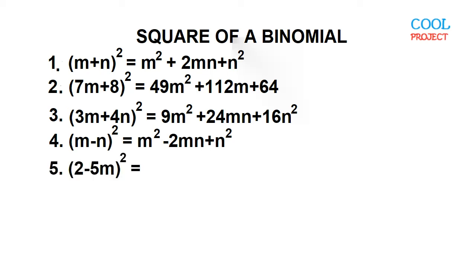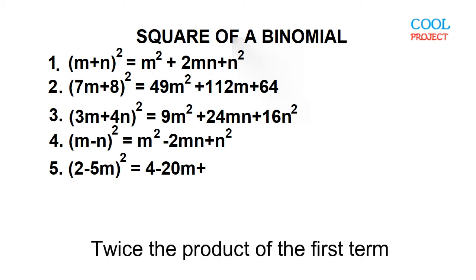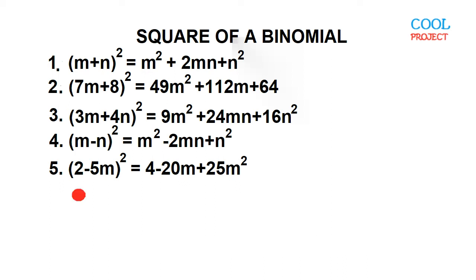Example number five: the square of the quantity 2 minus 5M. This is equal to 4 minus 20M plus 25M squared. 2 times negative 5M is negative 10M times 2 is negative 20M. Negative 5M times negative 5M is 25M squared.